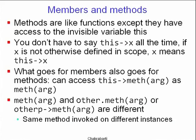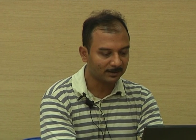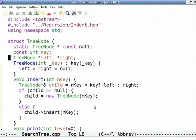Every object has an implicit variable called 'this', so any method has access to this invisible variable. You don't have to say 'this->x' or 'this->left' — any member can be mentioned implicitly without this, as long as you are working on the current object. If you are working on some other object, you need an explicit pointer in that case.